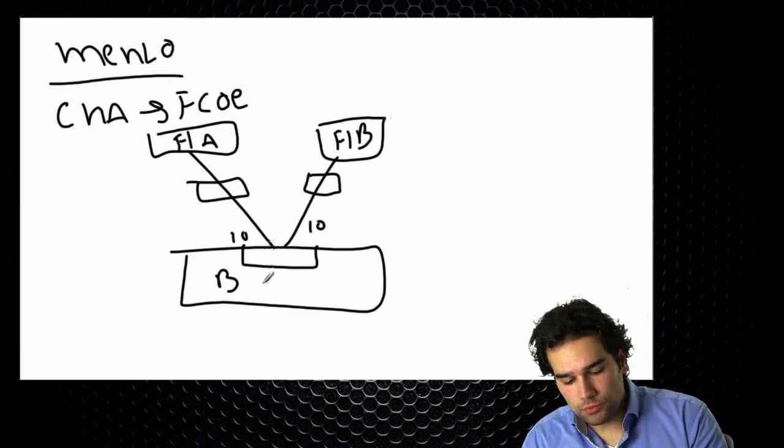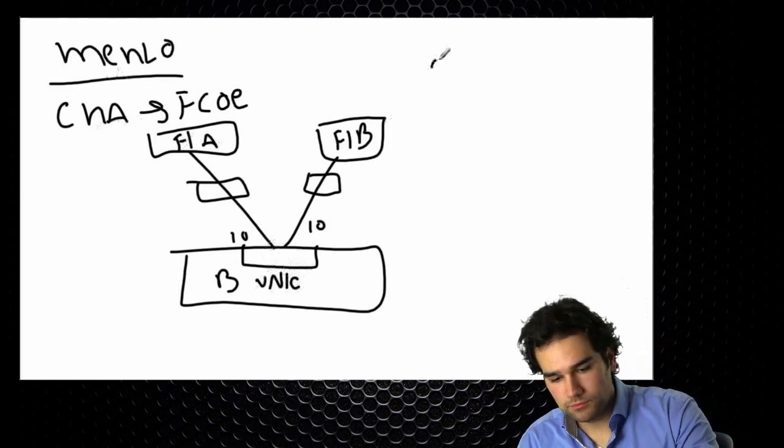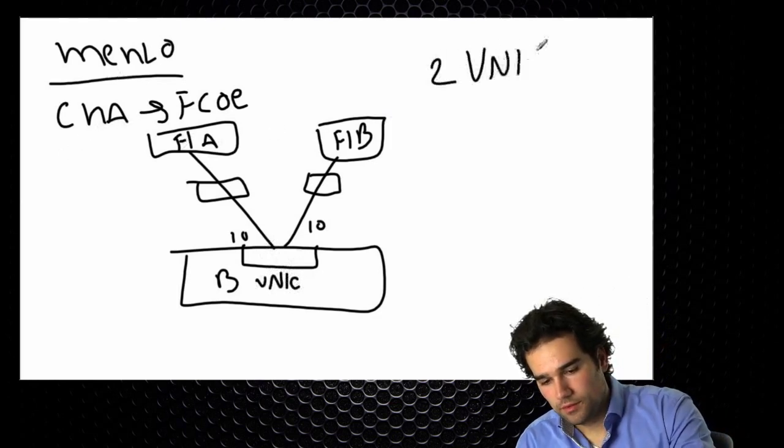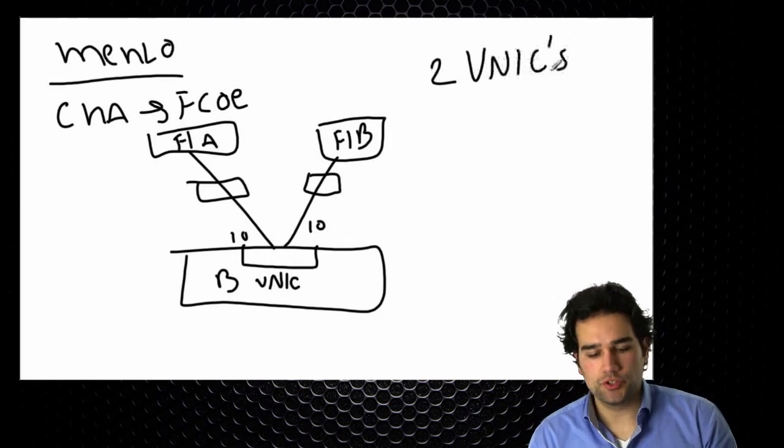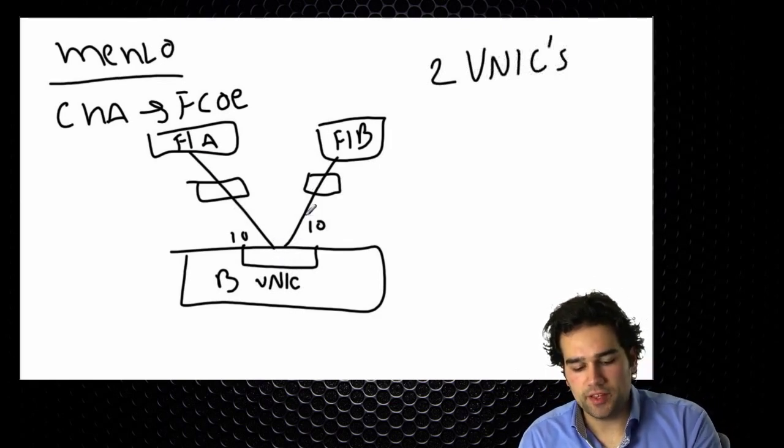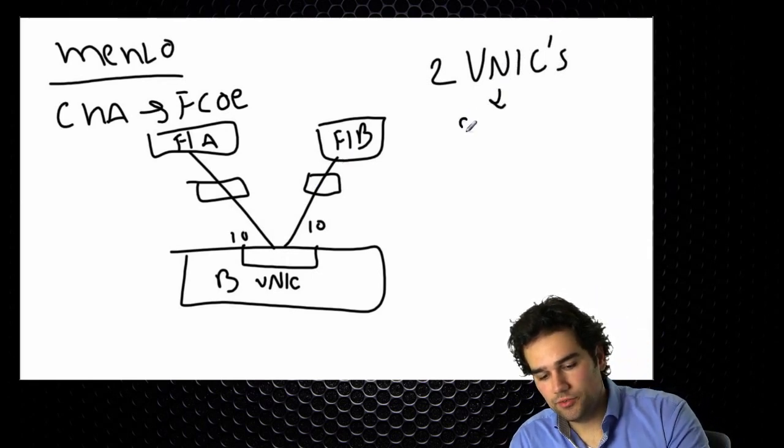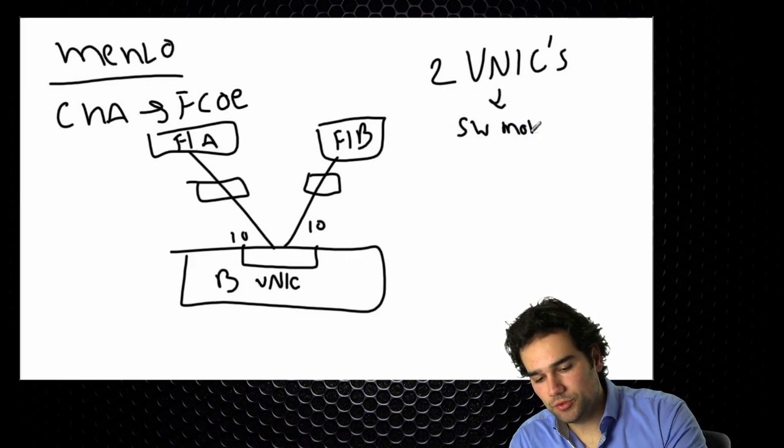So I have two what they call VNICs, virtual network interface cards. Actually these are not virtual, these are just two network interfaces. I have an interface going left and I have an interface going right. That's it. These are configured as switchport mode trunk.